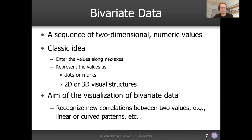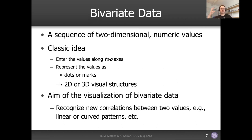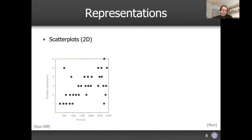The classic approach is to arrange values along two axes and represent them as dots or marks. These visualizations use 2D or 3D visual structures. The main goal of visualizing bivariate data is to recognize correlations between the two variables — that's the most common analytical task when working with bivariate data.